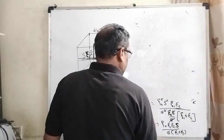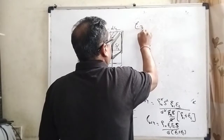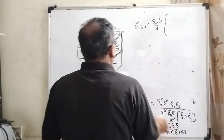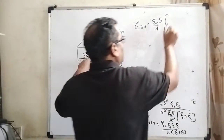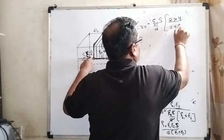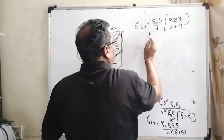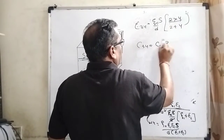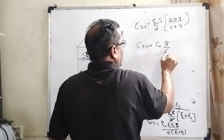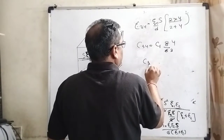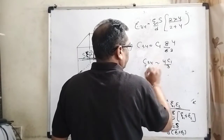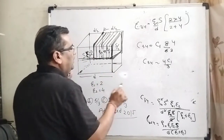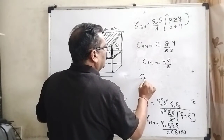So the combined capacitance C3,4 equals epsilon 0 times S divided by d, multiplied by (epsilon 1 times epsilon 2) over (epsilon 1 plus epsilon 2). Substituting epsilon 1 equal to 2 and epsilon 2 equal to 4: numerator is 2 times 4 equal to 8, denominator is 2 plus 4 equal to 6. Since C1 equals epsilon 0 times S over d, we get C3,4 equal to 4C1 by 3.